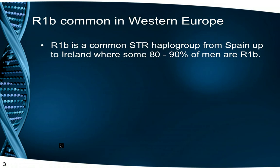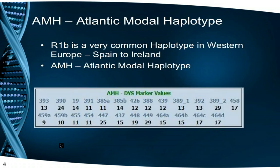A major Y chromosome grouping called R1B is commonly found in Western Europe, from Spain all the way up to Ireland, where some 80 to 90% of men are R1B. A very common signature is called the Atlantic Modal Haplotype, and these are the values of the first 25 markers as tested by the laboratory Family Tree DNA.